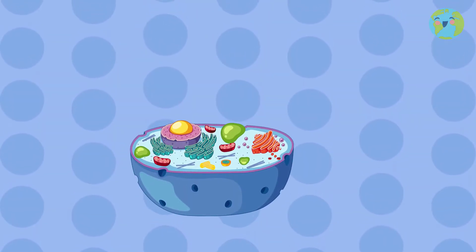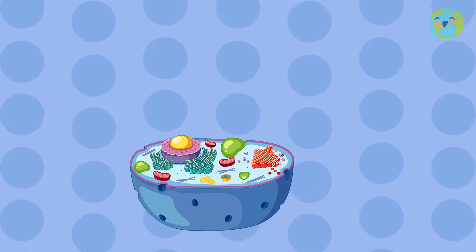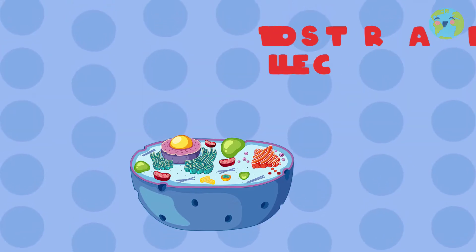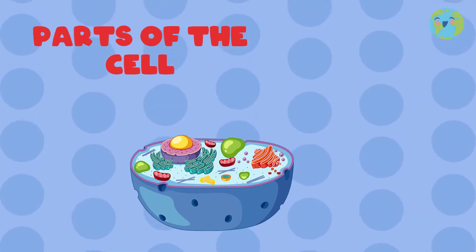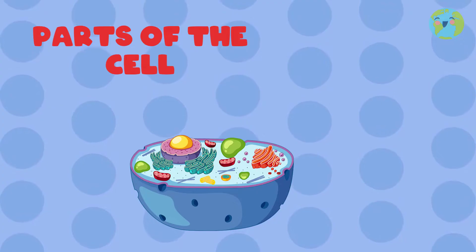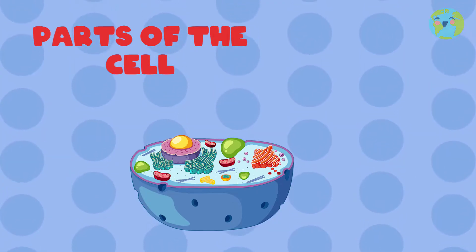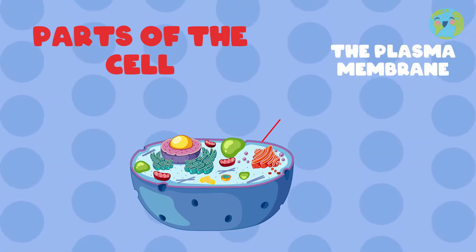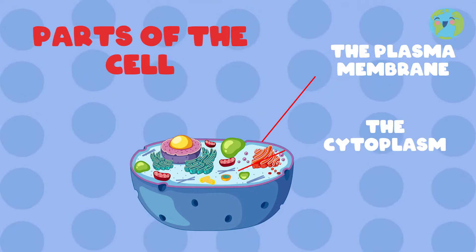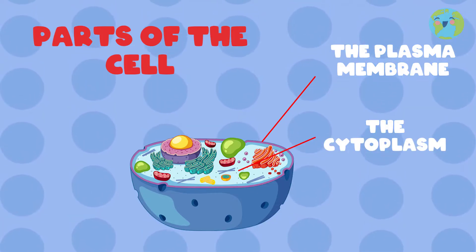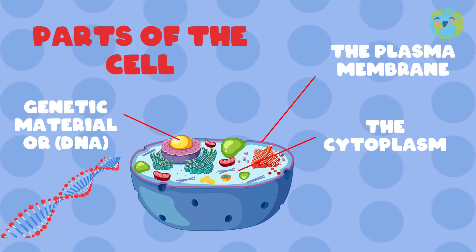Cells are made up of basic elements. Let's get to know the parts of the cell. The main ones are: first, the plasma membrane; second, the cytoplasm; and third, the genetic material, or DNA.